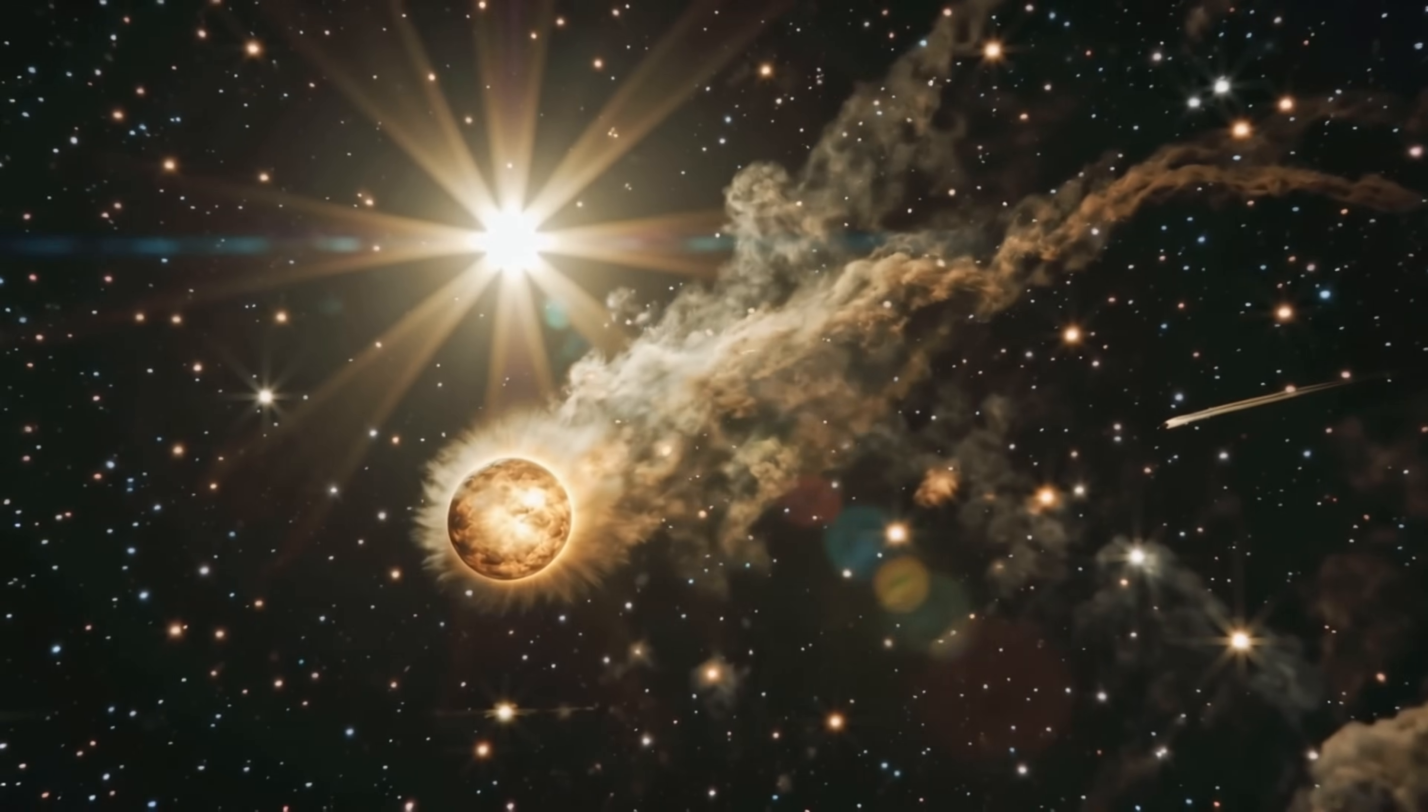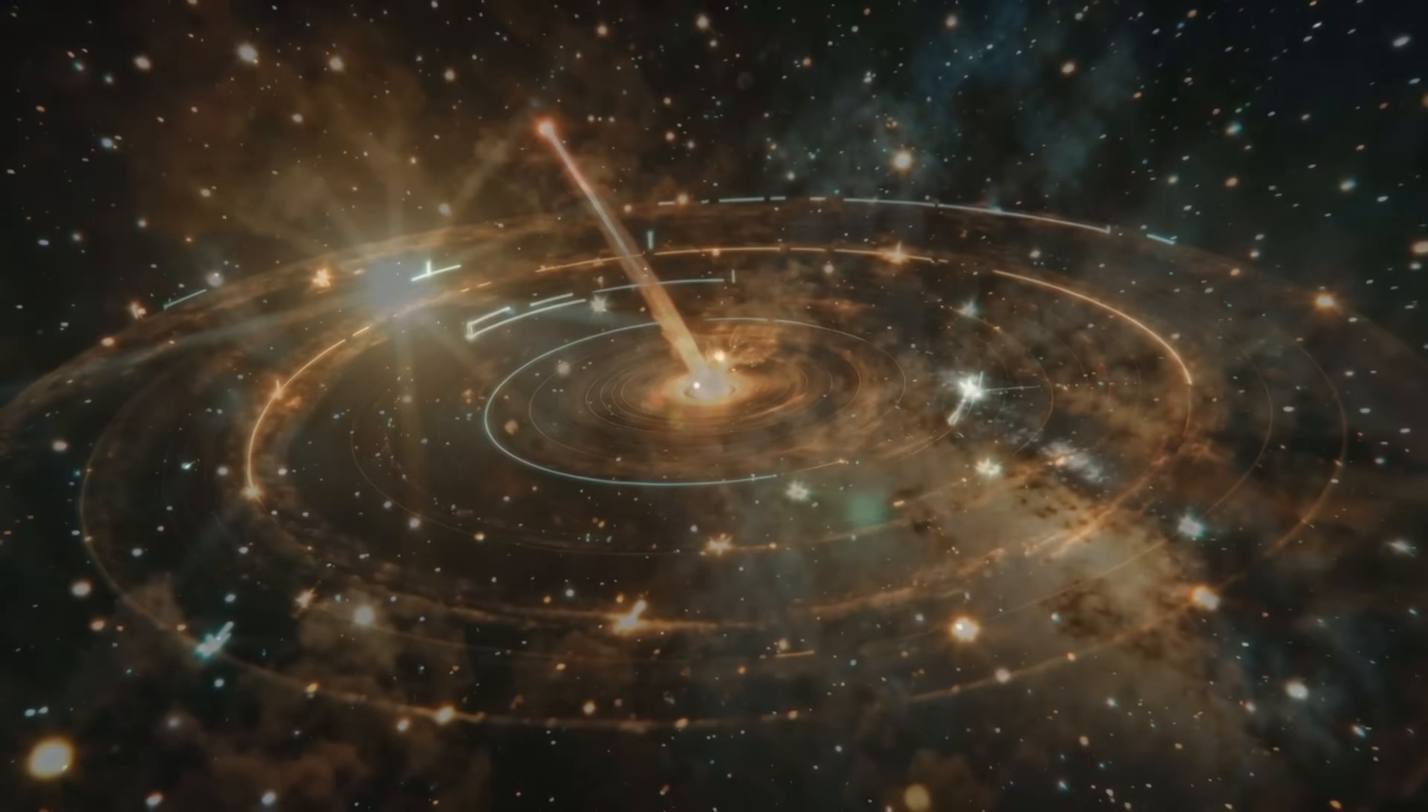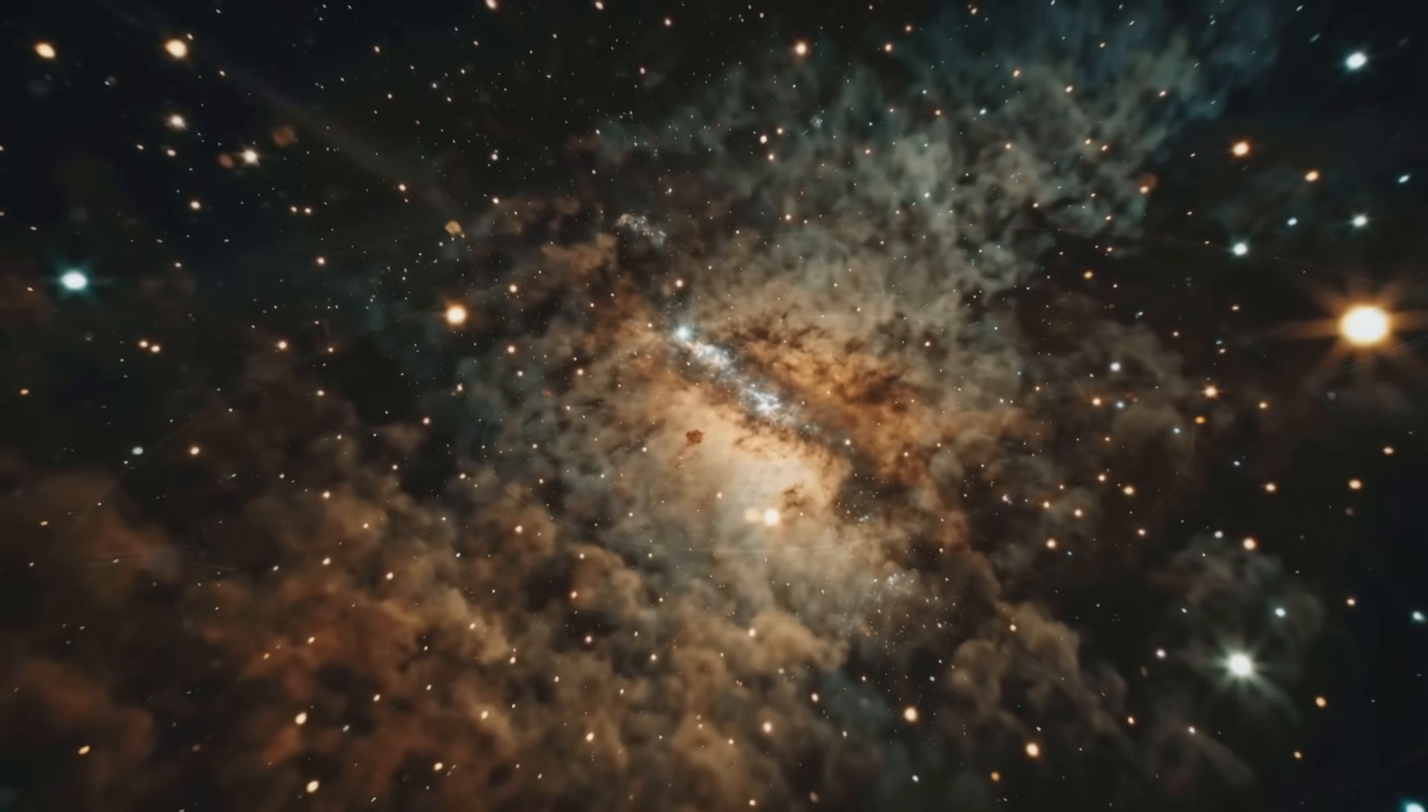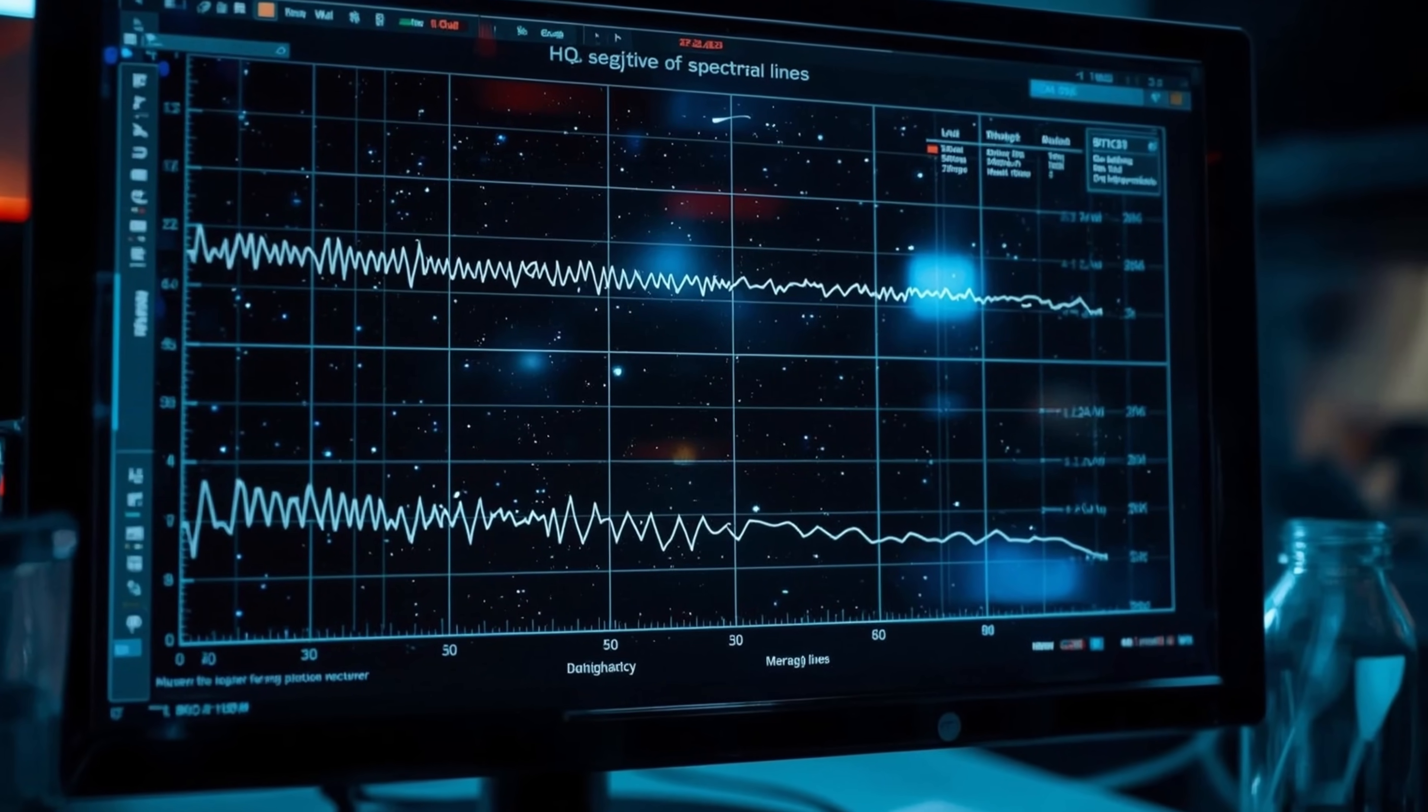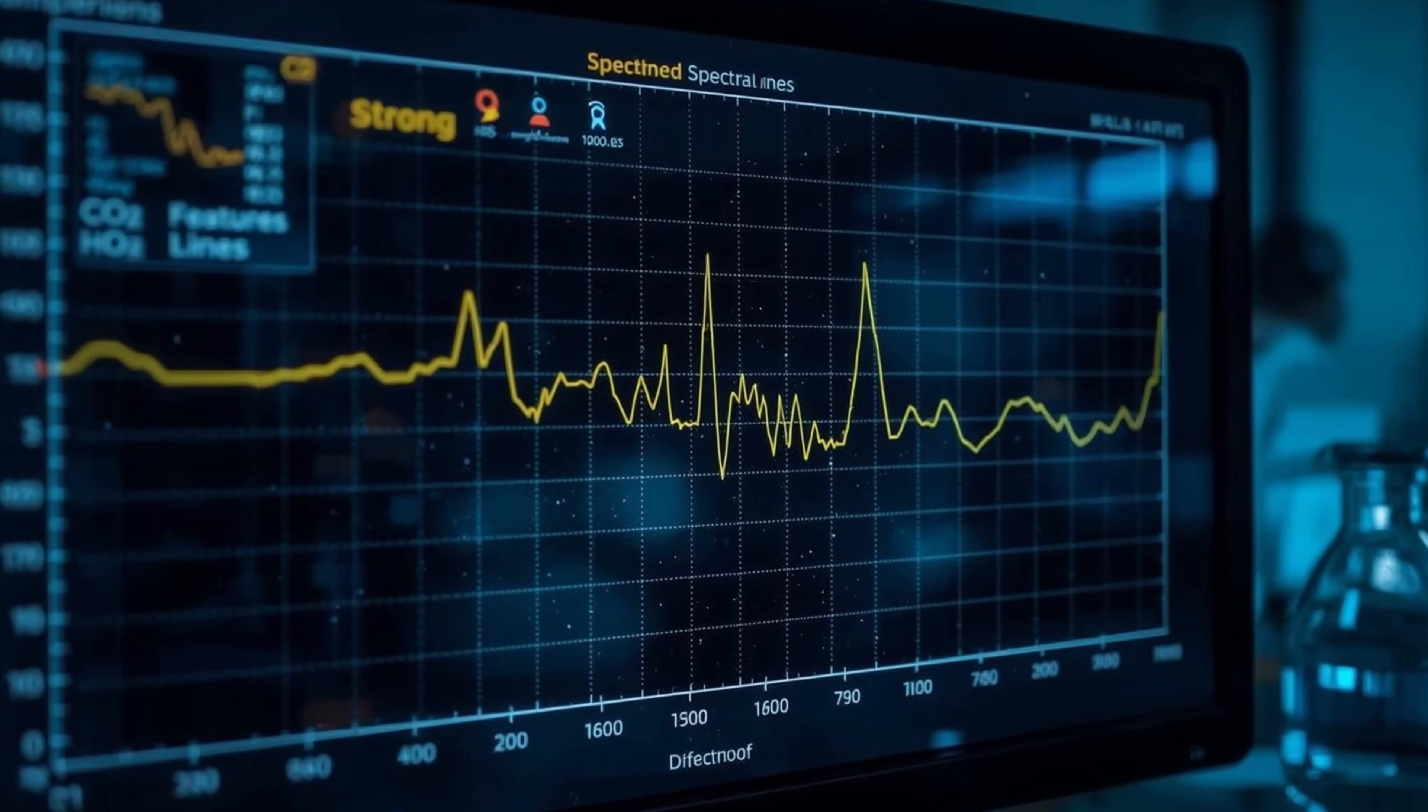3i Atlas is the third confirmed interstellar comet ever discovered and it's currently releasing more carbon dioxide than water as it approaches the sun from deep space. At about 3.3 astronomical units from the sun, roughly where the asteroid belt sits, JWST spectroscopy shows the comet's gas coma is dominated by CO2 with a ratio of about 8 to 1 over water molecules.